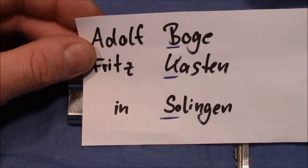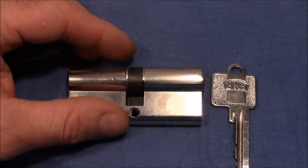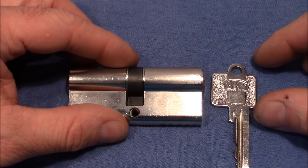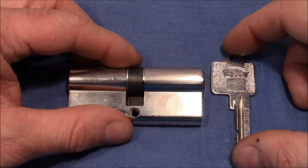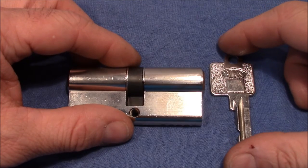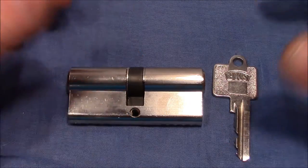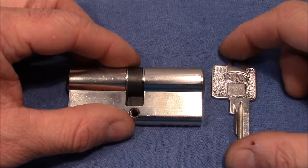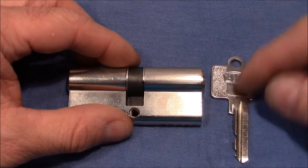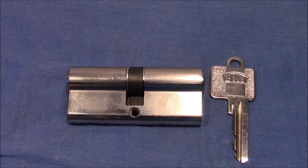Again later in 1983 BKS became a German company and it's now part of the Gretsch Unitas group. GU is the abbreviation. They still make locks and it's a German company located in Velbert.